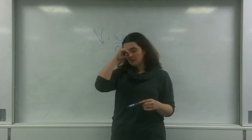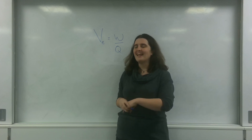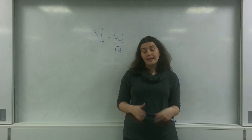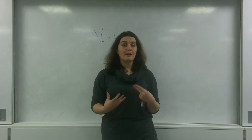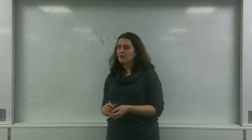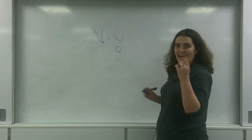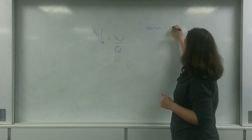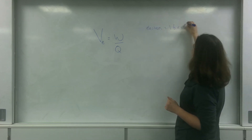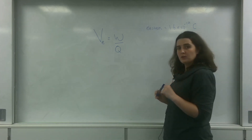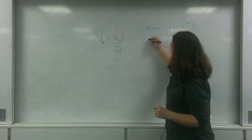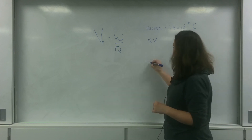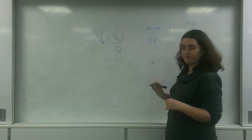Within a field, two electrons would each feel a potential. Depending on the potential, it depends on how much energy they have. Let's imagine an electron. The electron has a charge of 1.6 times 10 to the minus 19 coulombs. In one circuit we feel a potential of 12 volts, and in another circuit we feel a lower potential of 5 volts.